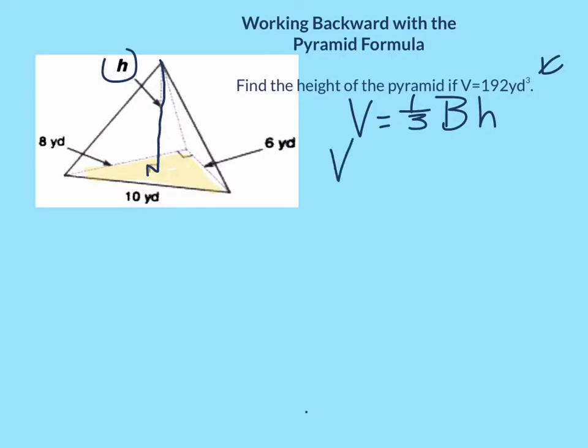So first thing you want to look at is what kind of pyramid do you have. Look at the shape of the base. In this case, it's a triangle. So we're going to replace the big B with one-half little bh, because the big B stands for the area of the base. And then this h right here is the height of the pyramid itself.